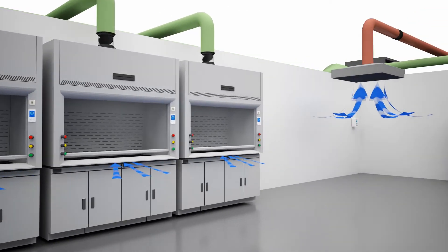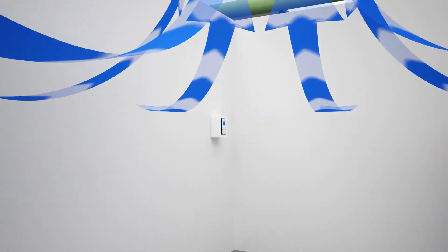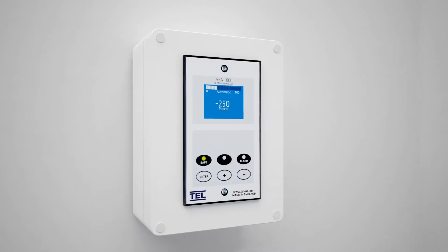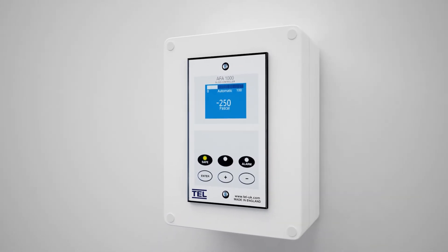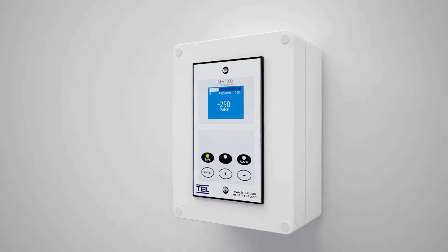TEL's AFA 1000 Bleed Controller is a wall-mounted fresh air bleed controller that controls the VAV system duct pressure using a fresh air bleed damper or fan inverter drive.